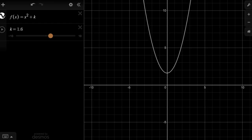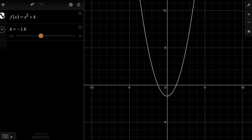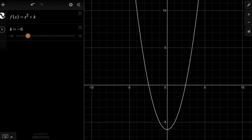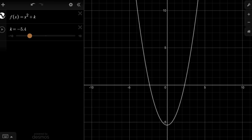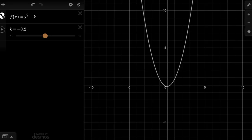And if we increase the value of k, notice how it shifts the graph up. And as we decrease the value of k, if k is zero, we're back where our vertex is right at the origin. And then as we decrease the value of k, it shifts our graph down. And that's pretty intuitive, because we're adding or subtracting that amount to x squared, so it changes the y value. It shifts it up or down.